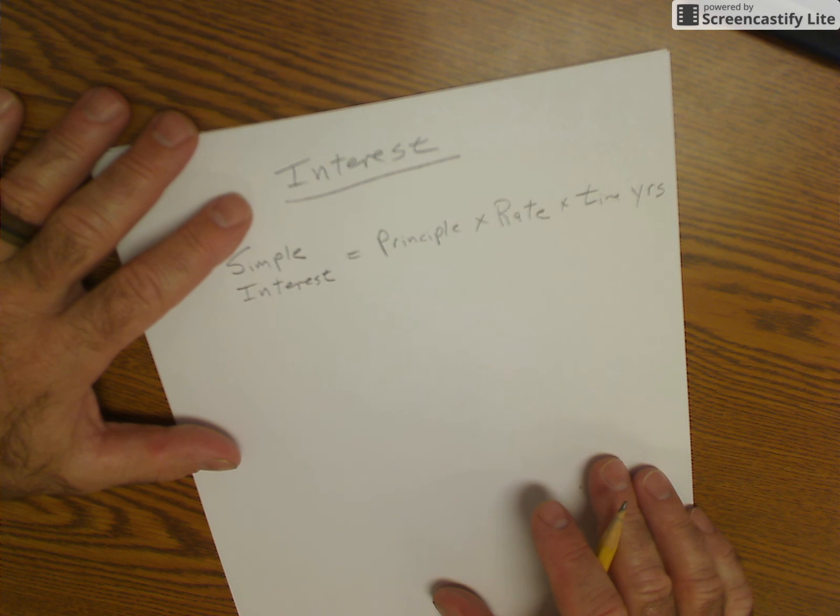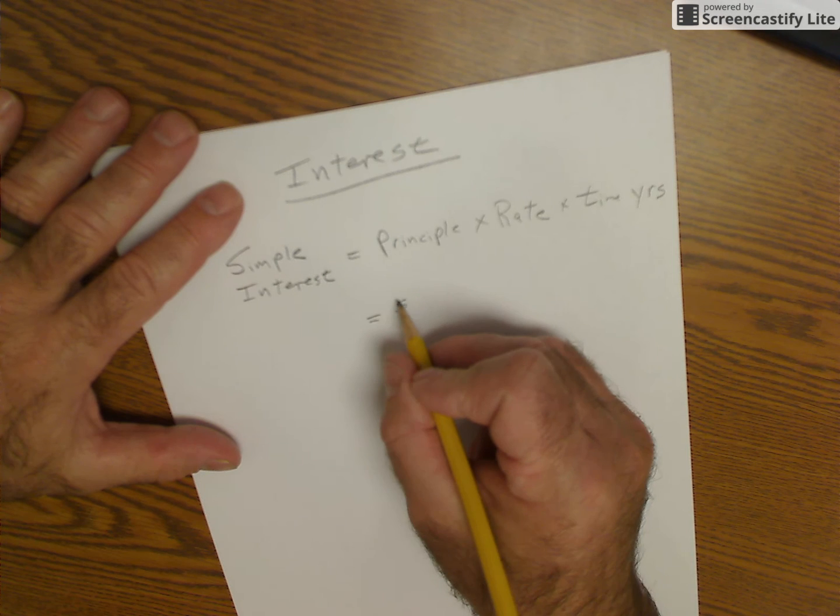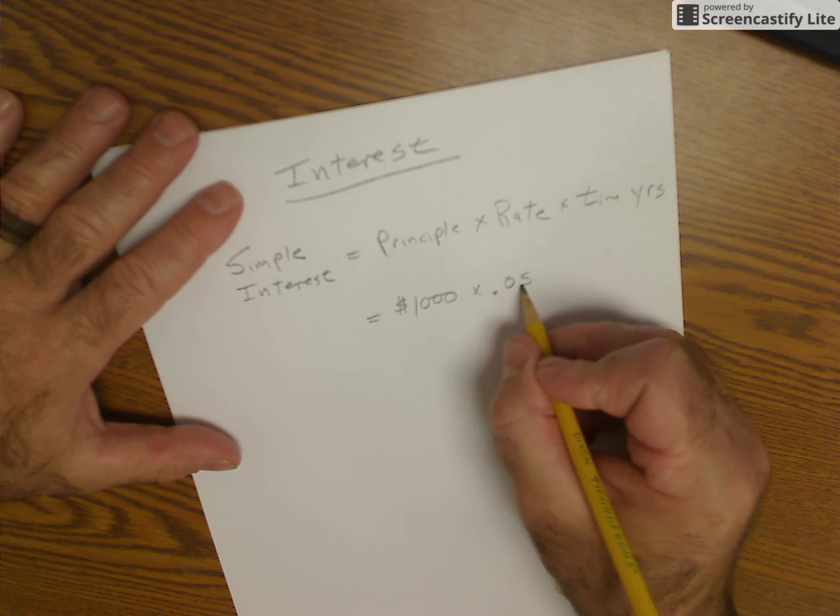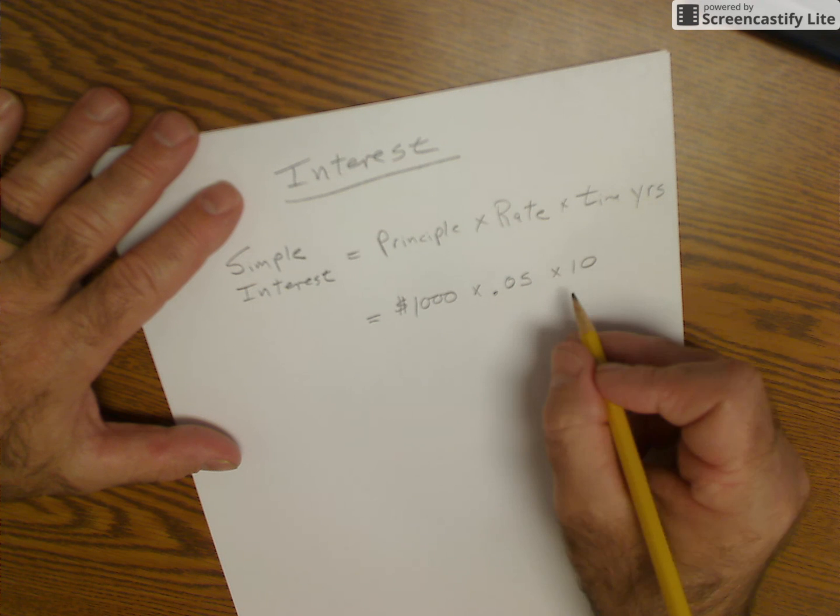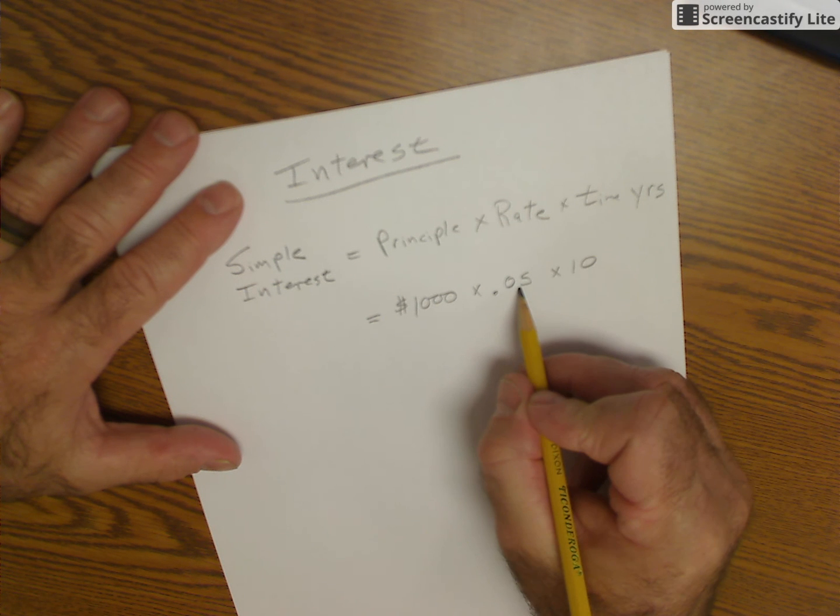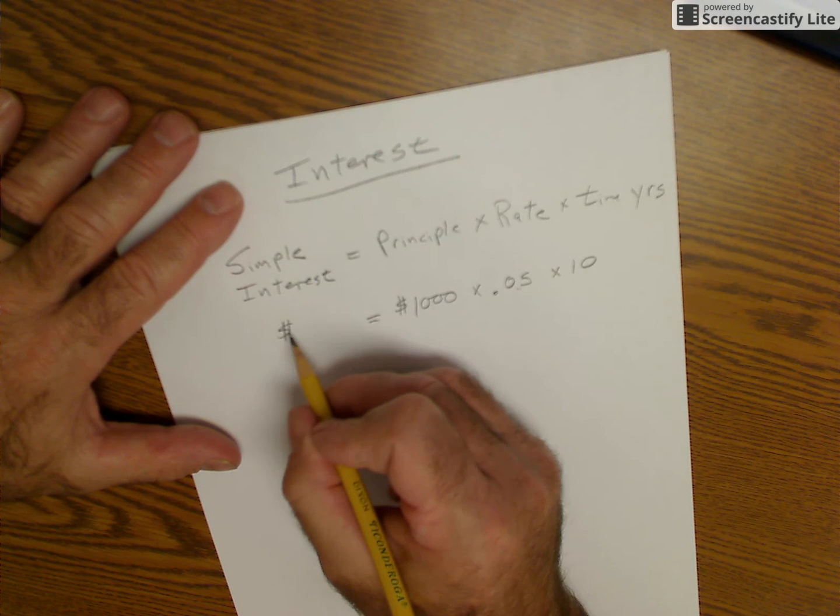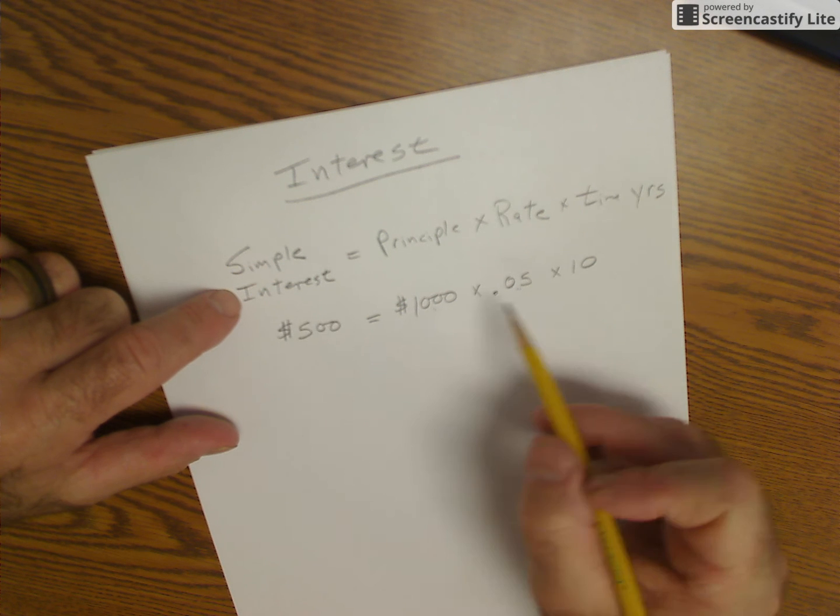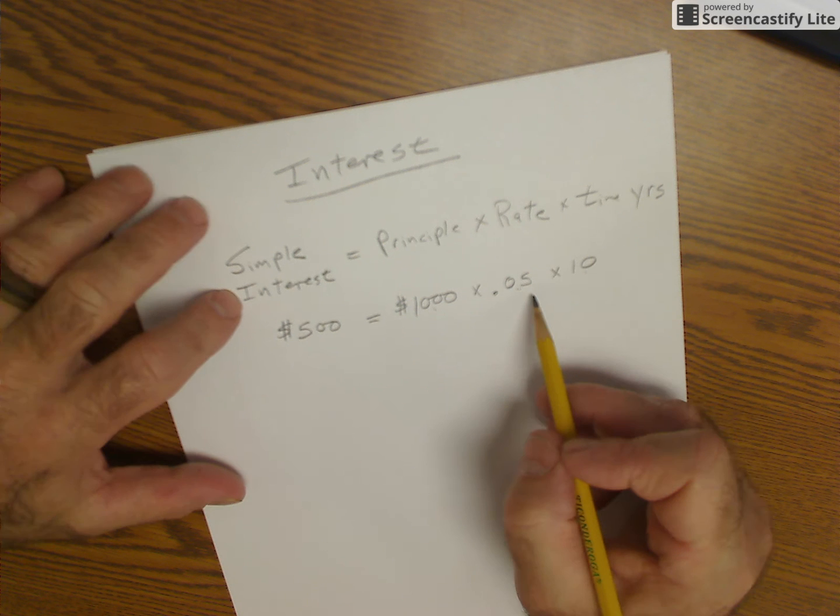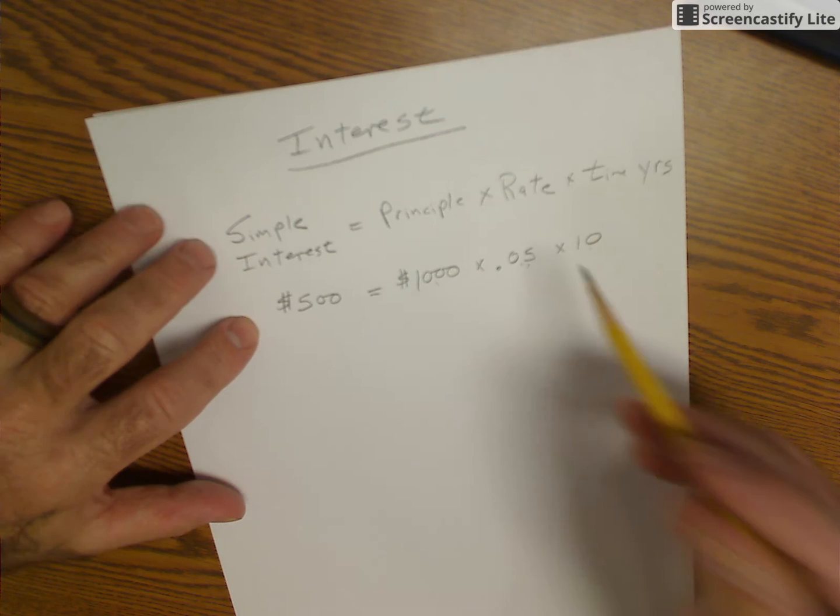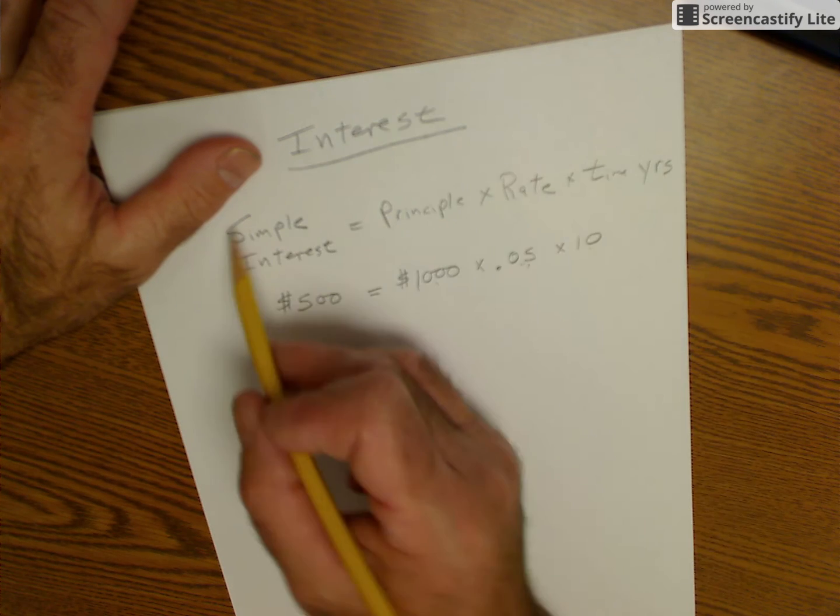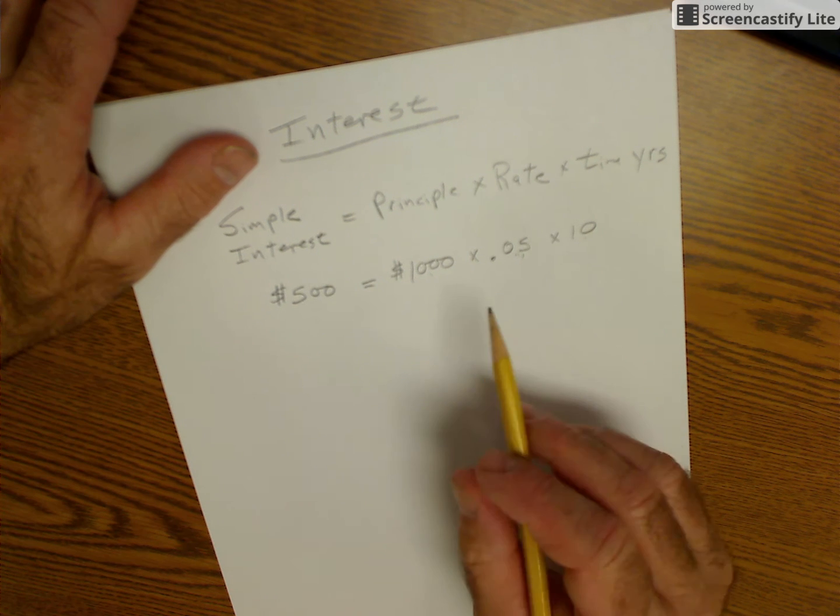So how much interest do I pay if I borrow $1,000? So how much interest do I pay on $1,000 over a 10-year span at a 5% interest rate? And I could do it as long as I have three of these four variables that could solve any equation.